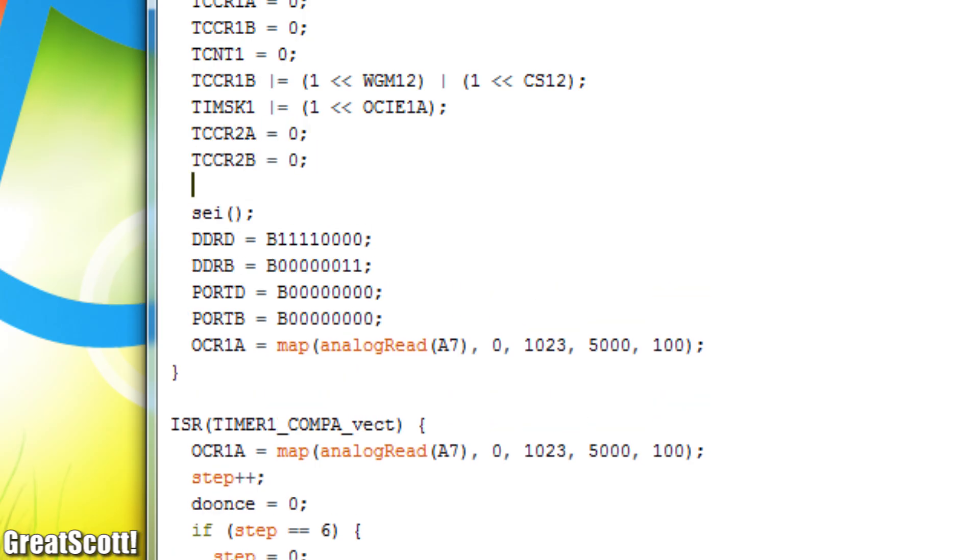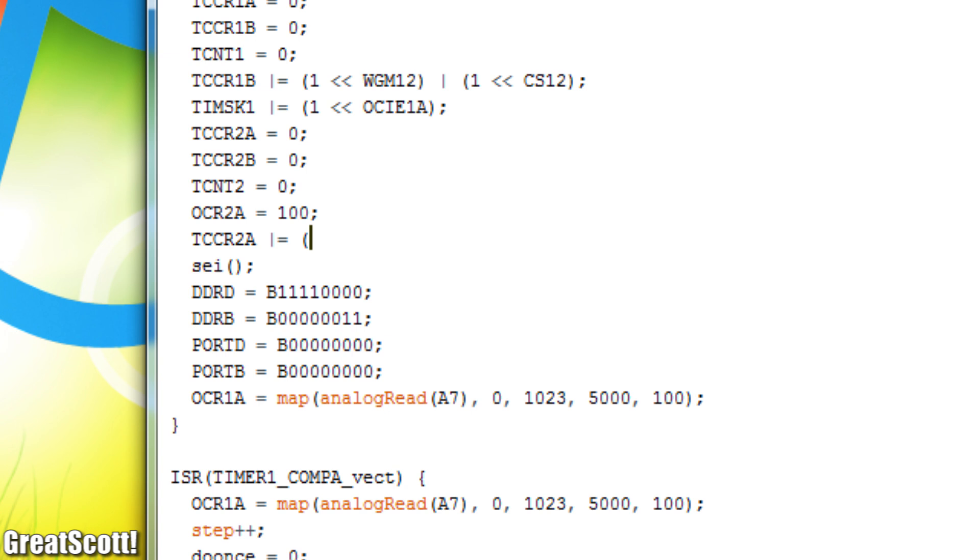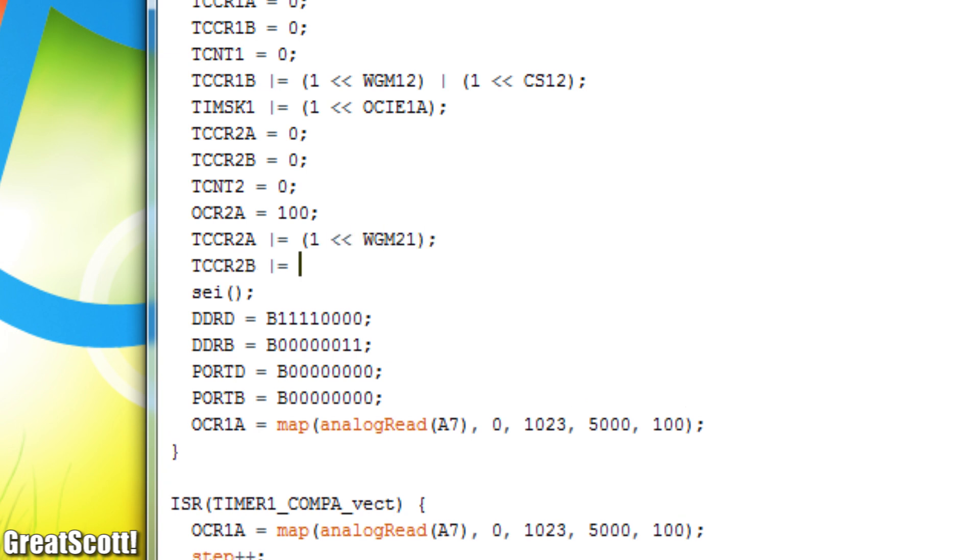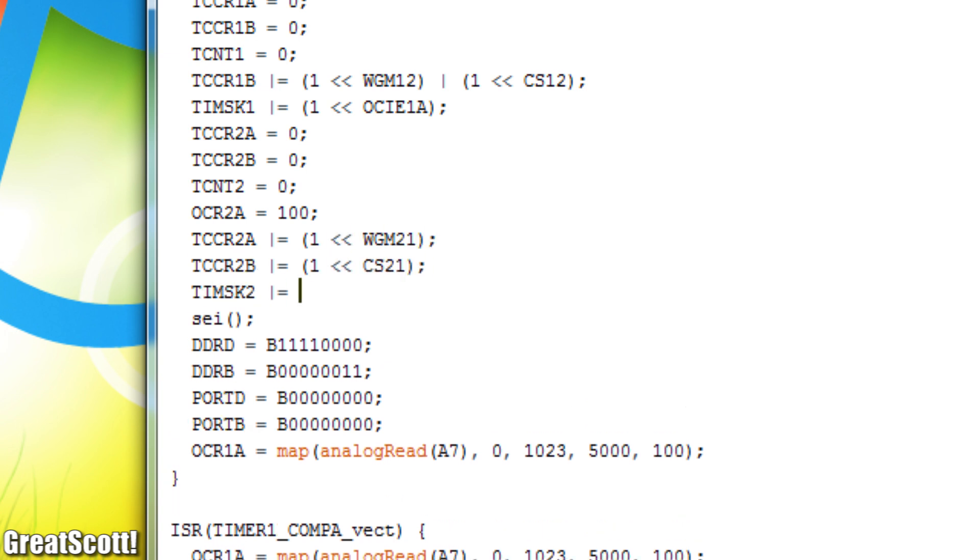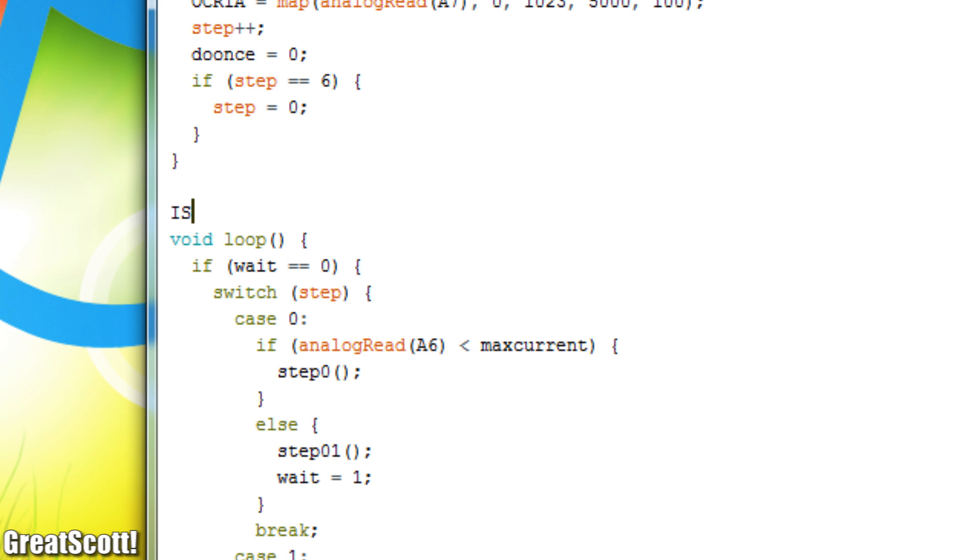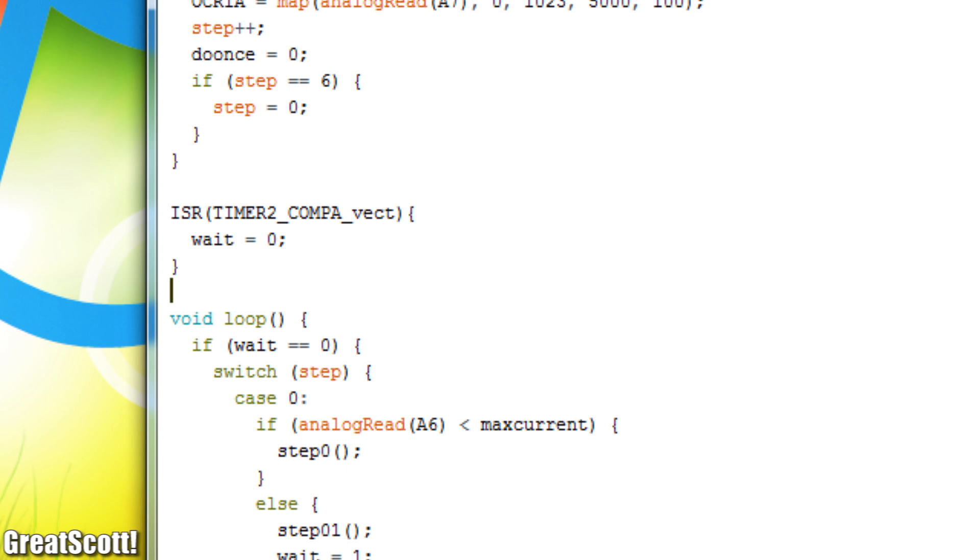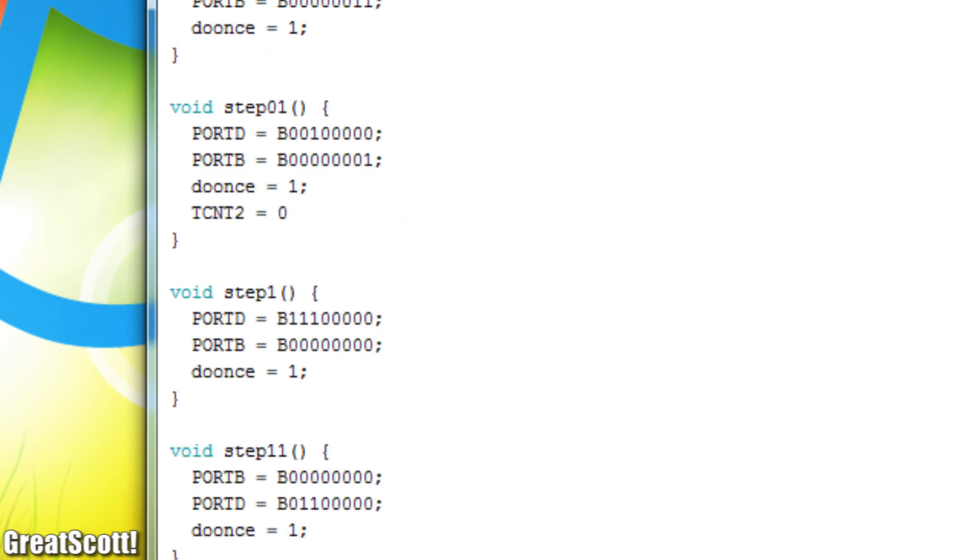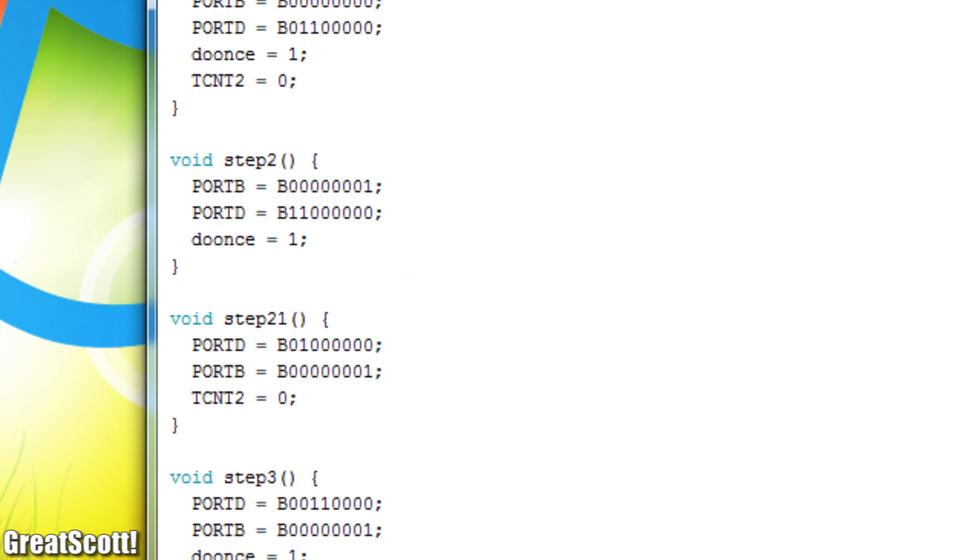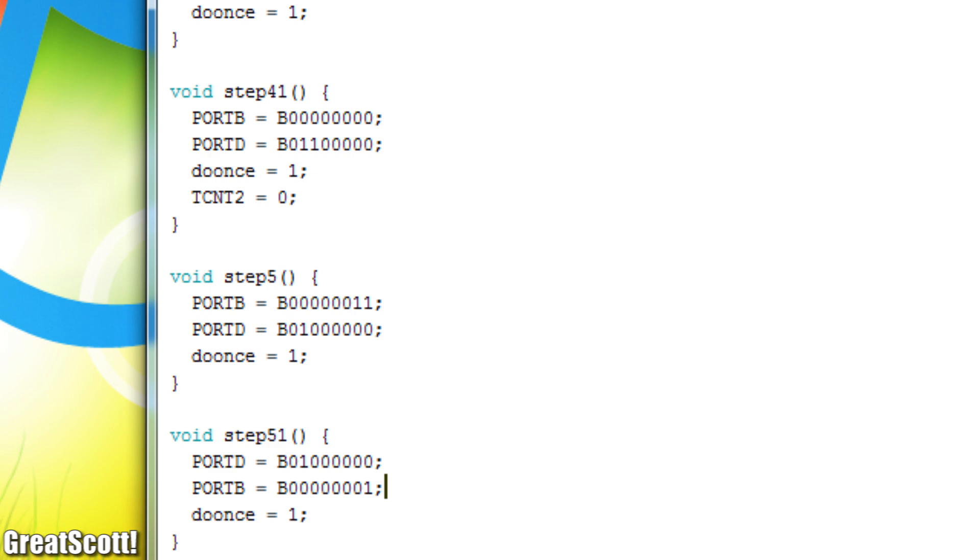I went with a value of 50 microseconds, which I created by utilizing timer 2 of the Arduino microcontroller. All the timer interrupt does is reset the wait flag so that the usual steps can once again be activated. But we should not forget to reset the timer 2 counter when the intermediate steps are activated.